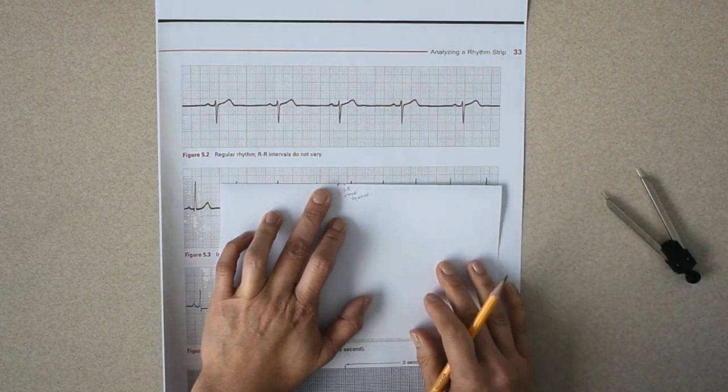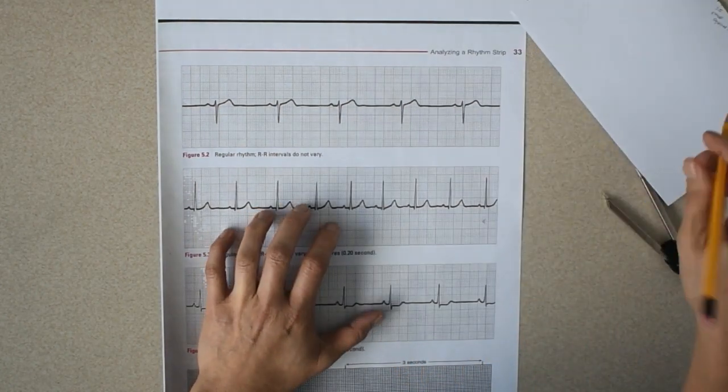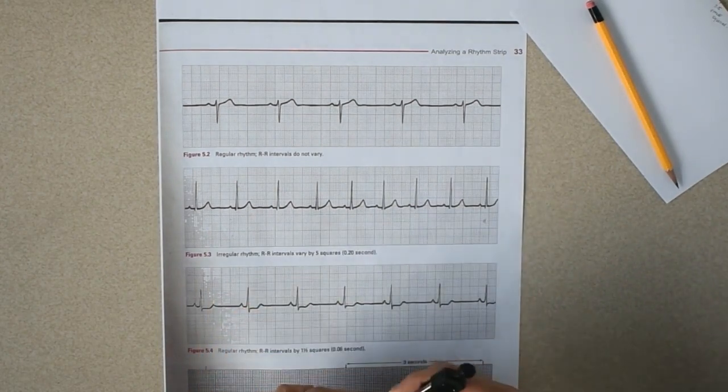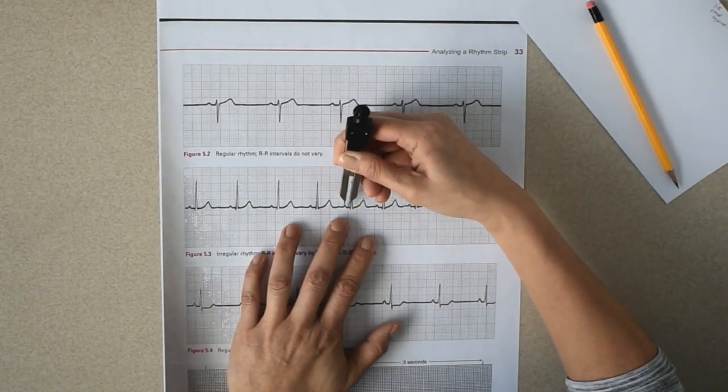Okay, and then you multiply by your 0.04. Alternatively, using a caliper, for that same PR interval,